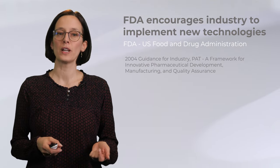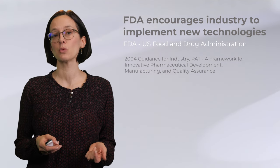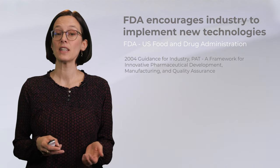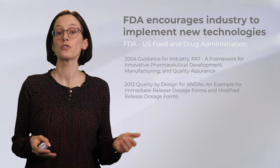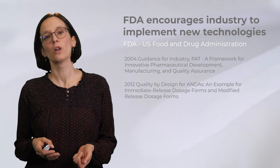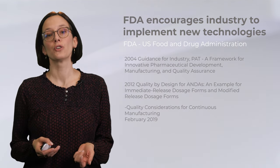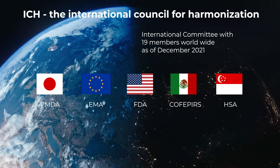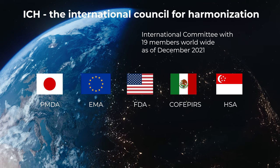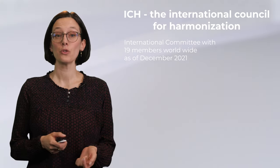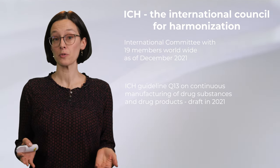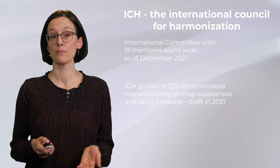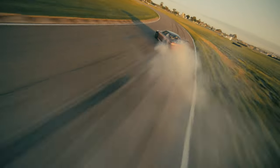The potential of continuous manufacturing and process analytical technology was realized early by the FDA. In 2004 a framework for innovative pharmaceutical development, manufacturing, and quality assurance was published. This was followed by relevant documents in 2012 on the quality by design approach, and in 2019 by quality considerations for continuous manufacturing. The ICH, the International Council for Harmonization, which has 19 members around the globe as of 2021, also works to implement continuous manufacturing, and in 2021 the Q13 guideline on continuous manufacturing of drug substances and drug products was published.